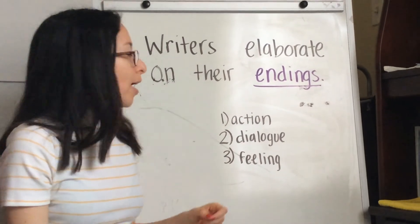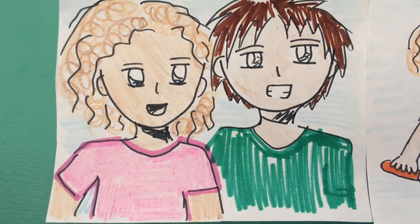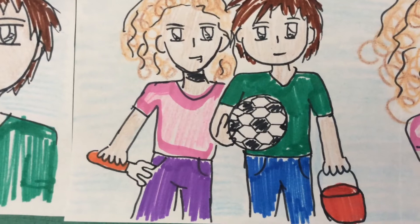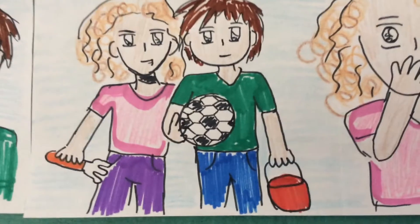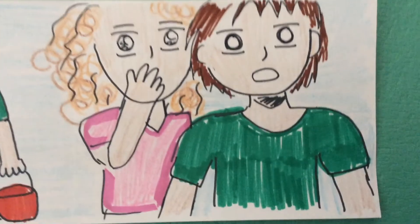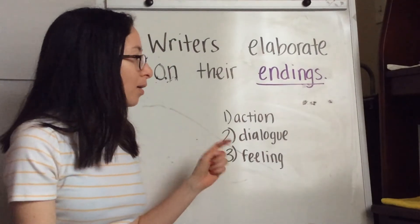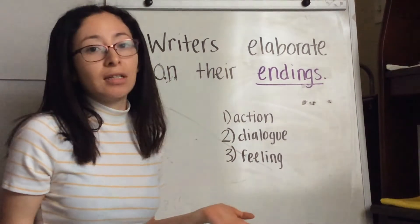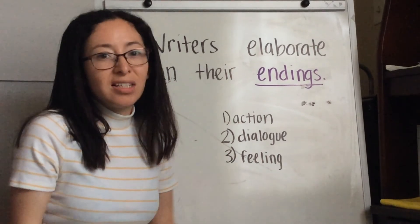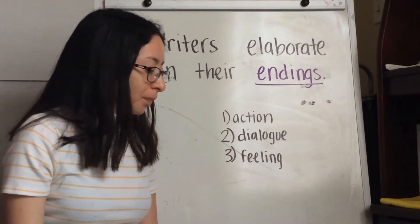I'm going to give you a short story. Notice if I use action, dialogue, or feeling. One day, Salah wanted to play with his friend Yalitza. They ended up grabbing their soccer ball, their pail, and all their toys, and they were heading over to the park. But as they were heading over to the sandbox, they noticed a strange and unusual — the end. Is that a way to end the story? No. I didn't have action, dialogue, or feeling. There was a problem in the story, but we didn't give our character a solution. Salah didn't have a solution. I'm going to try again.